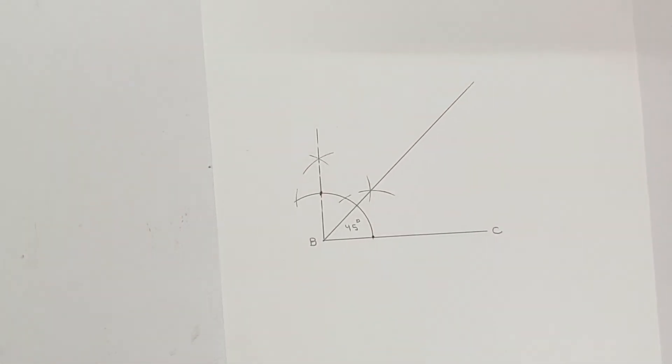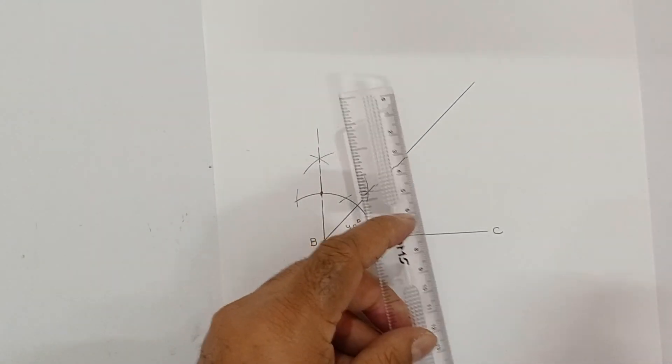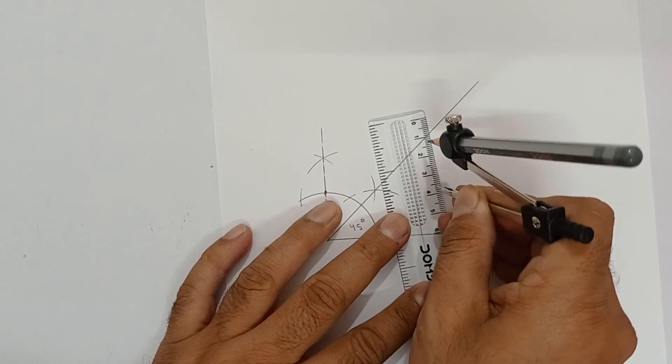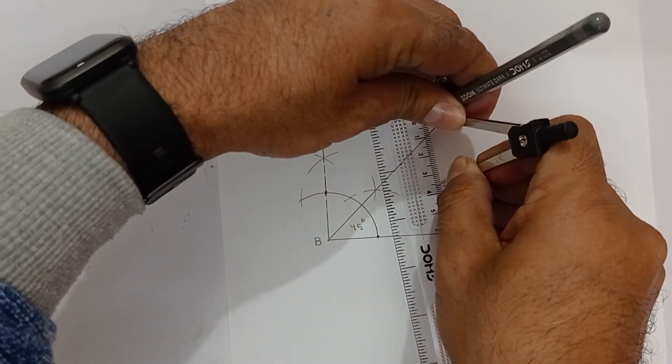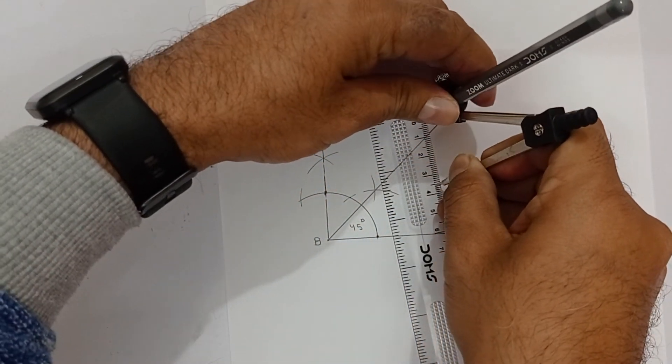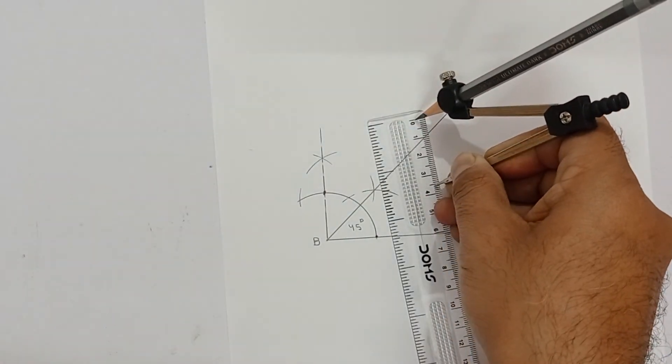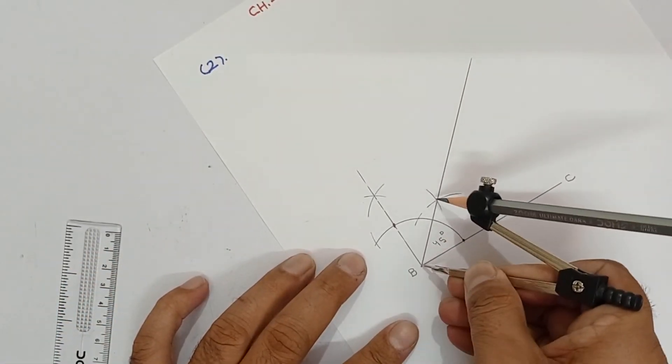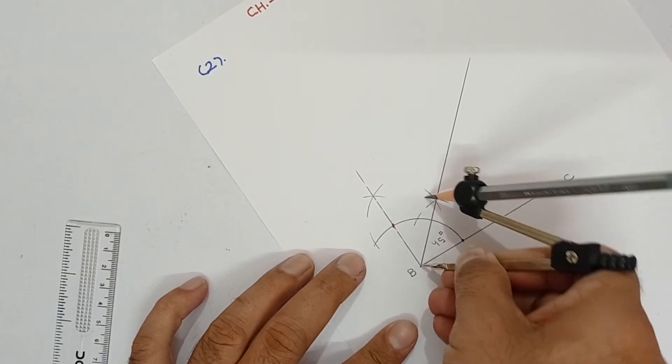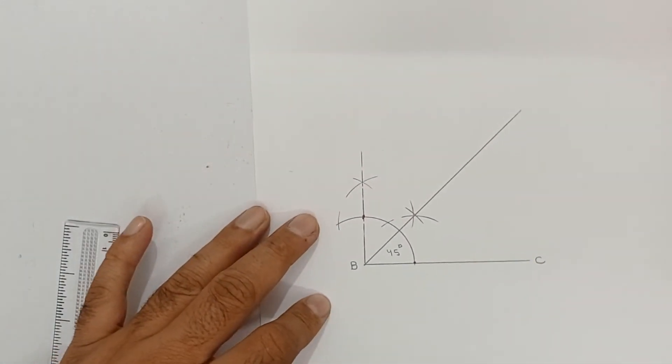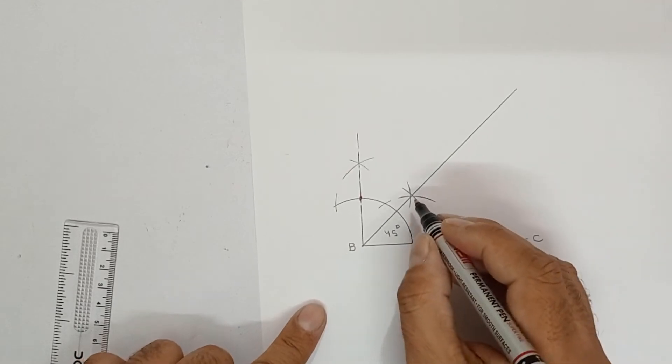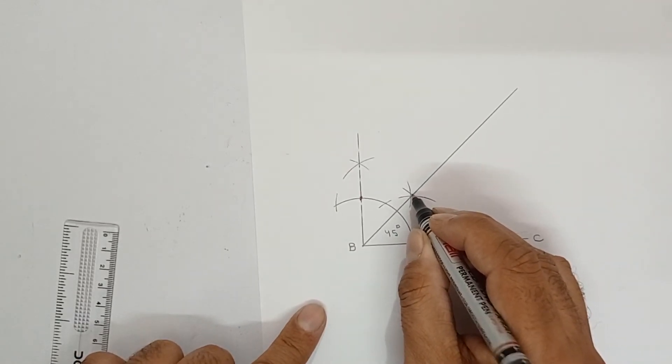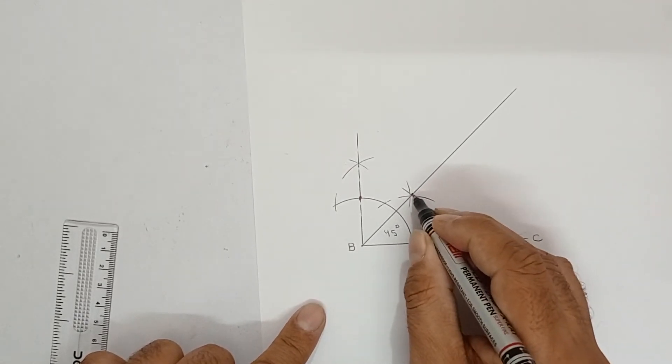What do you have to do? You have to open the compass 3.5 cm. So, I have kept the compass tip on this point, 3.5 and till 0. This 3.5 it is opened. Keep here at B point and cut an arc like this. This point that is coming, where this arc cut, this is 3.5 cm.